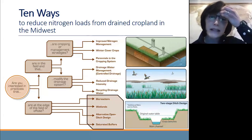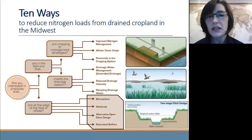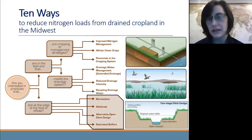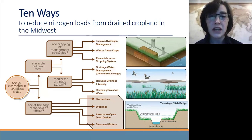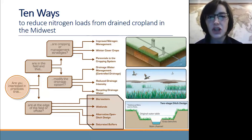The next practice in this slate is alternative open ditch design, which is basically a two-stage ditch. The idea with two-stage ditches is that we're retrofitting traditional trapezoidal drainage ditches to mimic more natural systems. With a two-stage ditch, we have a small main channel in the middle of the ditch which conveys most of the flow during low flow periods, and then two small grass benches or mini floodplains along the sides that carry flow during higher flow times.